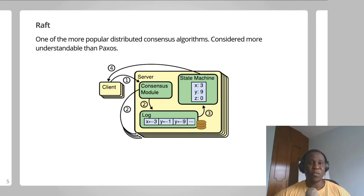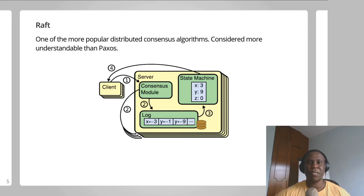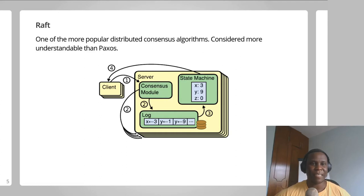Several popular distributed data stores, including Consul by HashiCorp and etcd — which is the default storage layer in Kubernetes clusters — use Raft for distributed consensus. Most recently, Apache Kafka switched from ZooKeeper to internal code that uses Raft for consensus. The diagram on this slide illustrates the architecture of a distributed system using Raft.